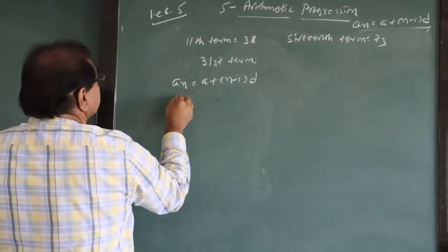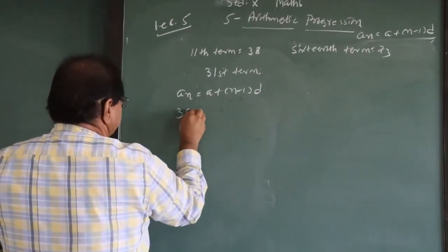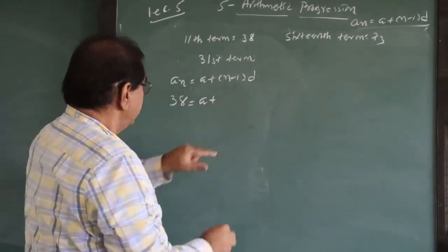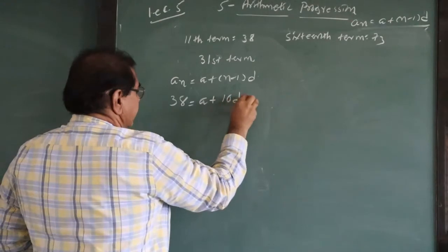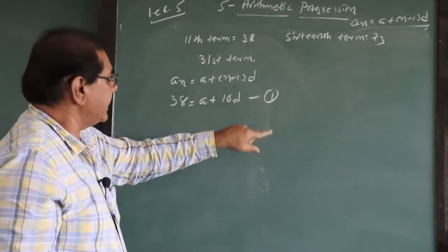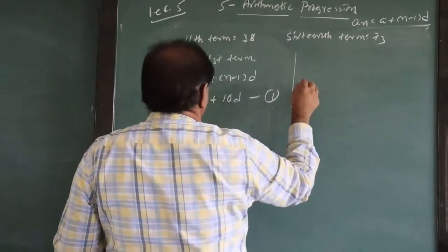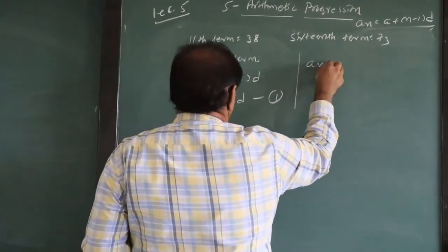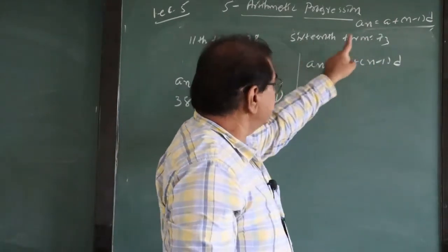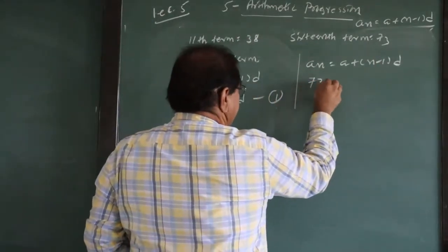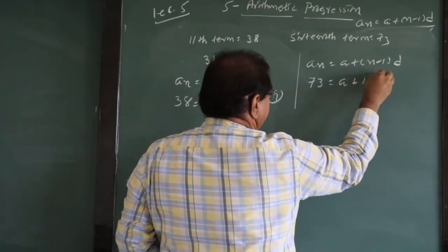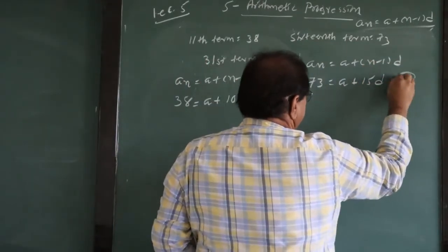For the 11th term using An = A + (N-1)D: 38 = A + 10D. This is equation 1. Similarly for the 16th term: 73 = A + 15D. This is equation 2.